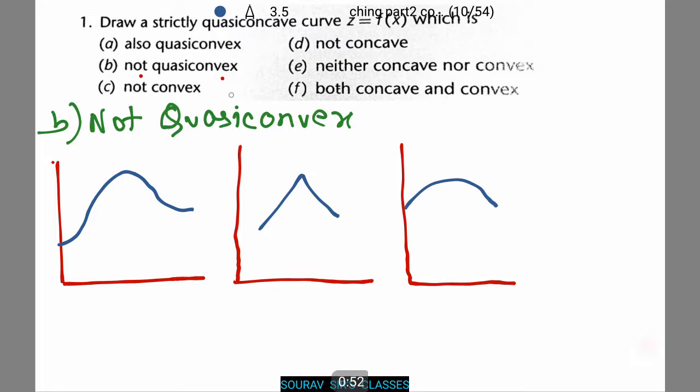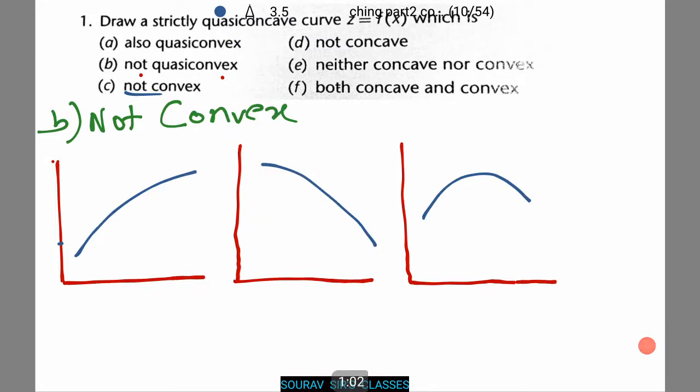Let's do for the next case of not-convex. Similarly, these are the examples for not-convex. All these three figures you need to draw when these questions are given. These are all the possible sets for a quasi-concave curve z equals fx being not-convex.